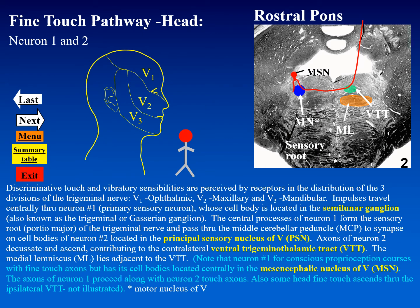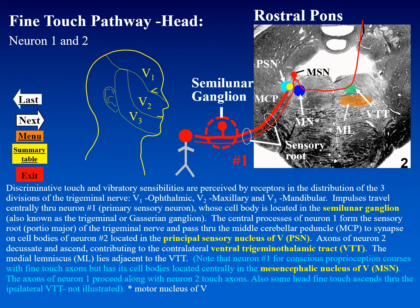The three divisions of the trigeminal nerve are responsible for receiving fine touch information from all external and internal surfaces anterior to a coronal plane that passes anterior to the ear. The cell bodies of neuron one conducting discriminative touch and vibratory senses are found in the semilunar ganglion. The central process of neuron one terminates on the principal sensory nucleus of five in the rostral pons. Neuron two's axon decussates at the rostral pons, enters the ventral trigeminothalamic tract, and projects superiorly.